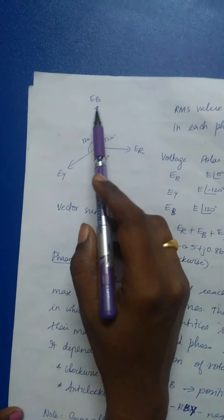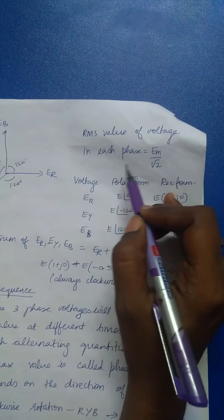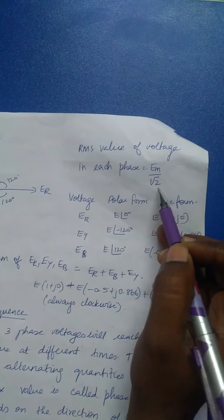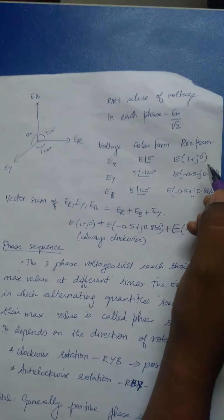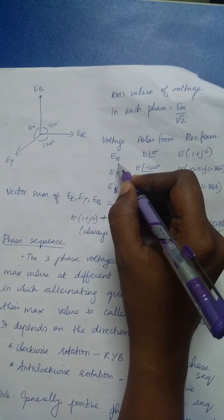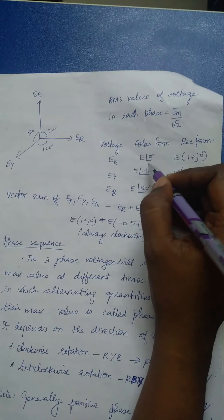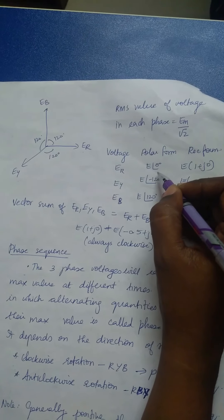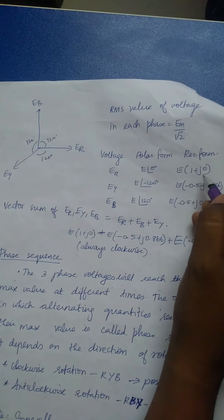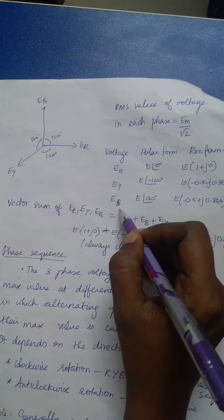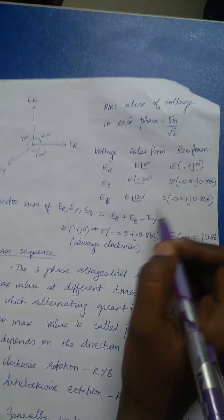The phase voltage is shown in this diagram. We are following a positive sequence: R, Y, and B. The phase voltages are Er, Ey, and Eb. The RMS value of voltage in each phase is given by the maximum voltage divided by root 2. In polar form, E_R has no displacement, so it is E∠0°, which in rectangular form is E(1 + j0). Likewise, for Y and B phases, you can calculate in polar and rectangular form.